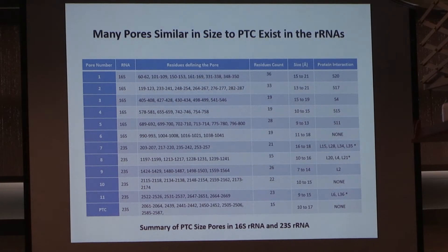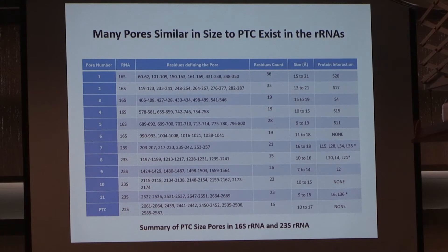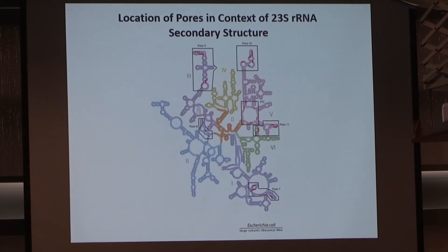We started looking for pores of this type — roughly one nanometer by one nanometer. We started looking through the RNA structures to see if we could find any holes or pores of this type. We looked at the ribosomal RNAs and other RNAs, and we found a bunch of pores. This slide lists the pores we found in the ribosomal RNAs, and this picture shows where some of these pores are in the 23S RNA — the large subunit RNA.